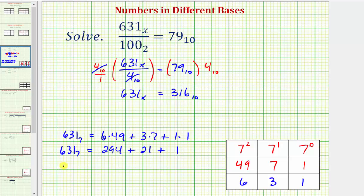And looks like we found it. We just discovered that 631 base 7 is equal to 294 plus 21 plus 1, which is 316 base 10. And therefore our solution is x equals 7.